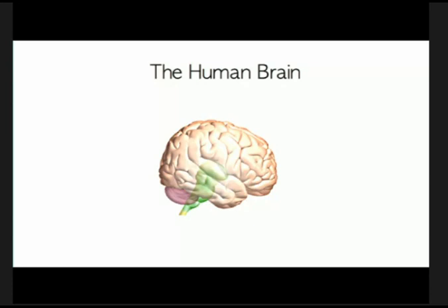This is a side view of your brain — front, back, up and down. Many of you may not know that it's just a fist-size chunk of tissue. It looks very big when you see the brain outside the body, but inside the body it's actually pretty small — about the size of your closed fist.